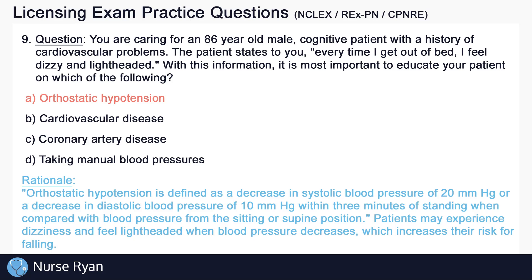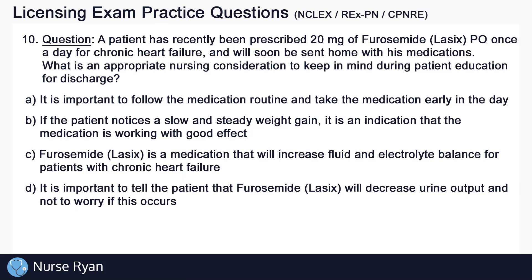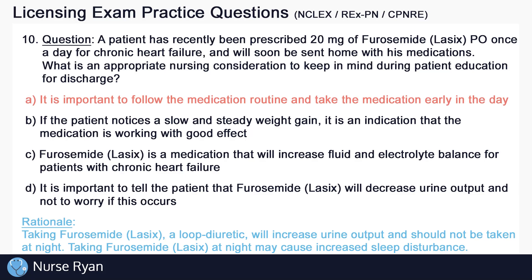And for the last question, number ten: a patient has been prescribed 20 mg of furosemide (Lasix) PO once a day for chronic heart failure and will soon be sent home. What is an appropriate nursing consideration for patient education at discharge? The answer is A — it is important to follow the medication routine and take the medication early in the day. Taking furosemide, a loop diuretic, will increase urine output and should not be taken at night, as it may cause increased sleep disturbance.